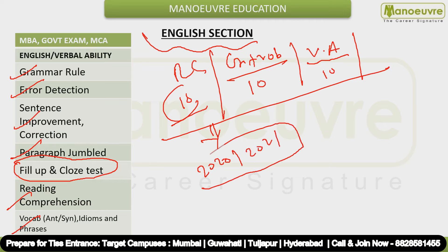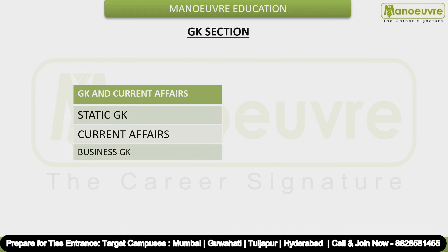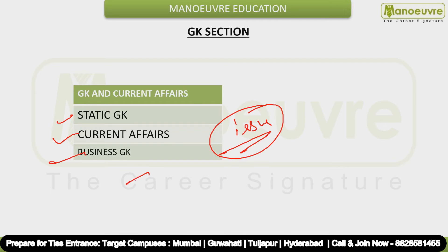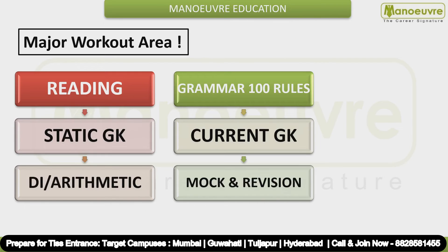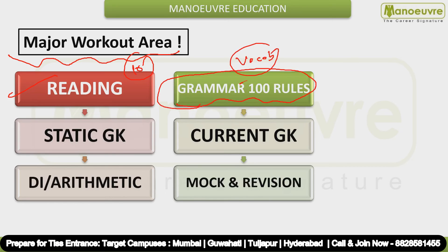Lastly, the toughest section of TISS-NET is GK. Static GK and Current Affairs both matter, with issue-based questions. Both are very important and this is the area where most candidates struggle. GK is the kind of area where from day one, if you are watching this video today and haven't started preparation yet, begin immediately — you cannot complete GK at the last moment. Static and Current Affairs GK, along with RC, grammar rules, vocabulary, sentence improvement, and correction — all of these need to be covered continuously.